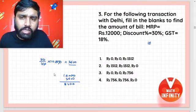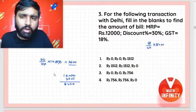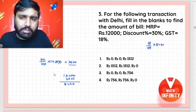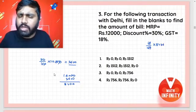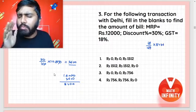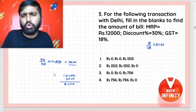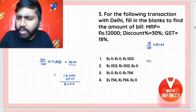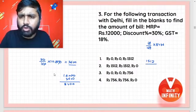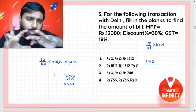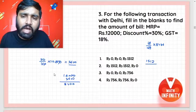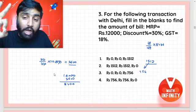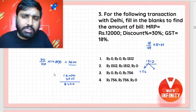Now, 18 upon 100 into 8,400. After cancellation, 18 times 84 gives us ₹1,512 as total GST. Since this is a transaction within the state, half goes to SGST which is ₹756, and half goes to CGST which is also ₹756.